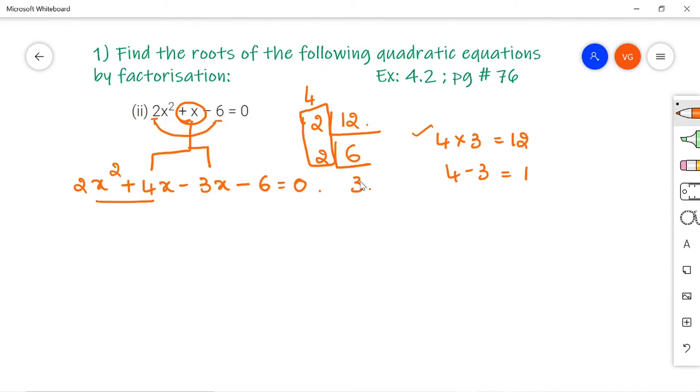Let us take common from these first two terms. You take 2x common, then x + 2. Again, from these two terms also, we have to take common such that you have to get it as x + 2. So, I will get minus 3 common. So, 2x minus 3 multiplied by x plus 2 is equal to 0.